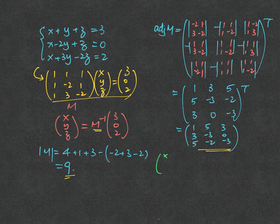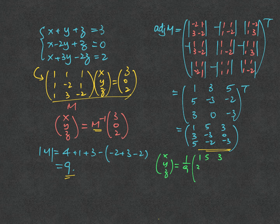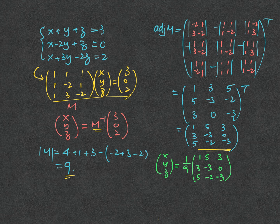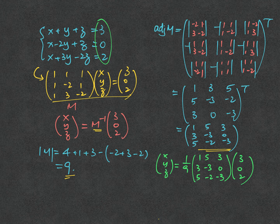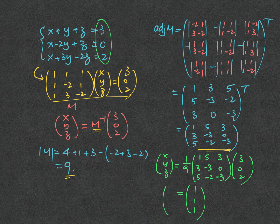So afterward, in order to find x, y, z, we follow M inverse, that means 1 over 9 of the square matrix, multiplied to (3, 0, 2), which is the column matrix, or the answers of the three equations on the right hand side. After simplification, you should obtain the answer of 1, 1, 1, which are the solutions of the equations.